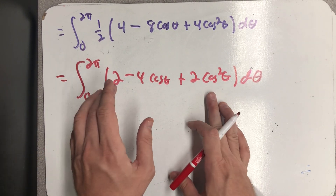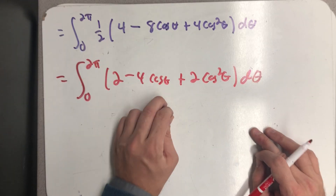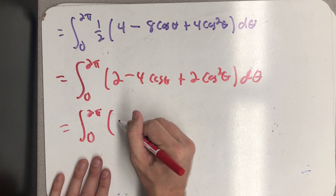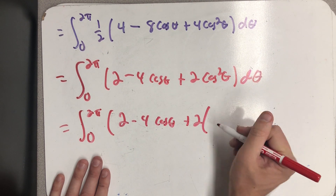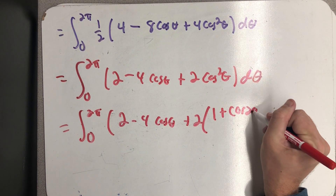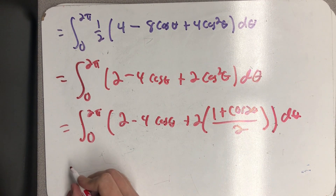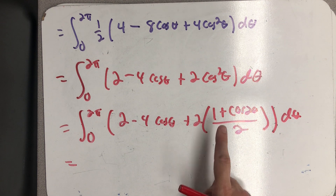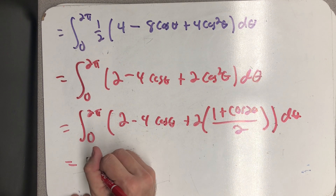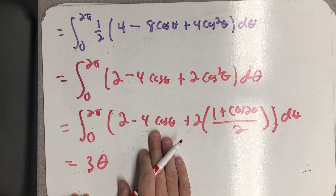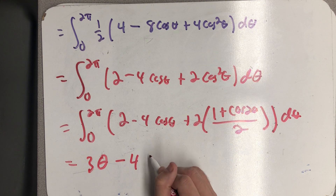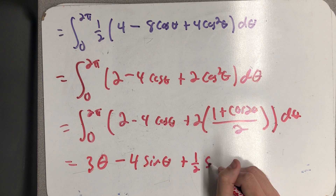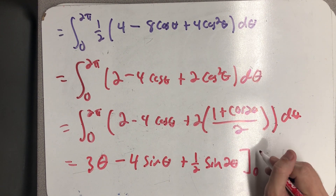That cosine squared term is going to require some work. I can find antiderivatives for the first two terms, but for cosine squared I need to use a power reducing formula. Going left to right, the terms that result from applying it nicely combine and I can collect them as 3, giving 3θ. The antiderivative for minus 4 cosine theta is minus 4 sine theta. The only thing left is the cosine of 2θ term. I need to evaluate all of this from 0 to 2π.